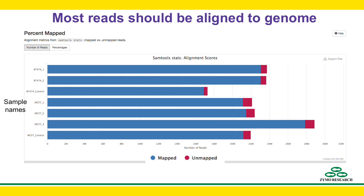Let's move on to the alignment step. In this plot, you can see how many reads were aligned or mapped to the reference genome — the blue bars — and how many reads were not — the red bars. Most of your reads should be aligned. If a large portion of your reads are not aligned to the reference genome, it indicates a problem with the experiment, such as foreign organism contamination.